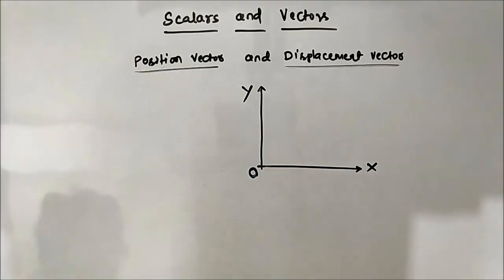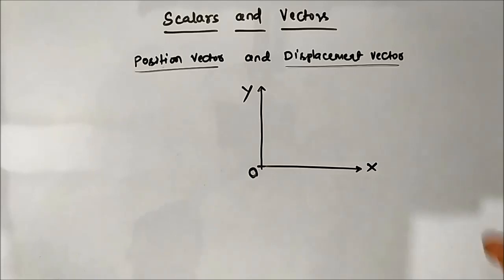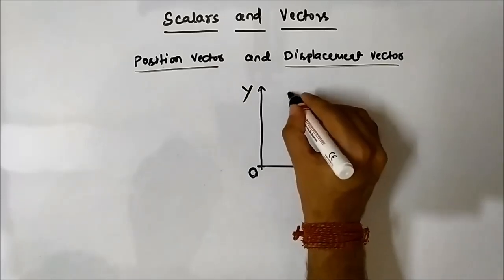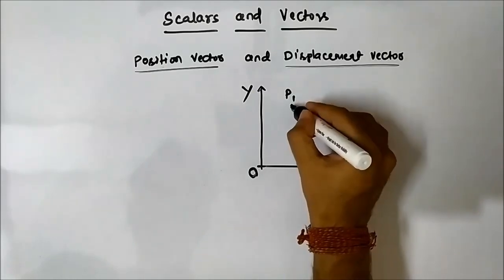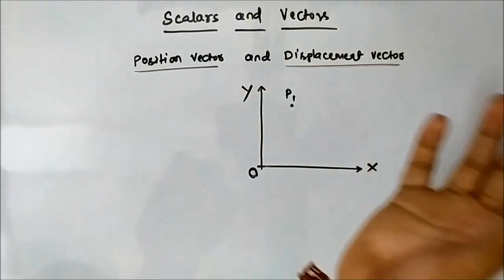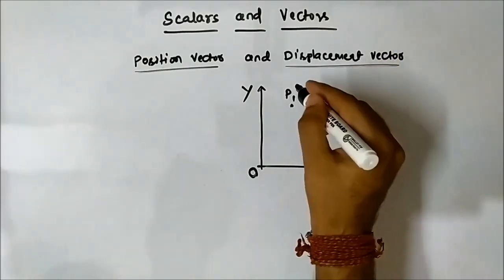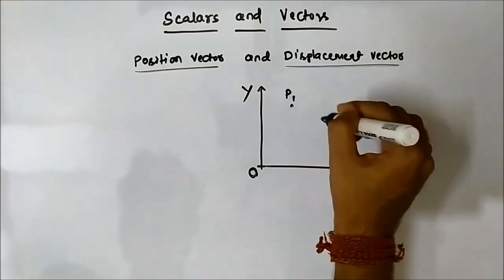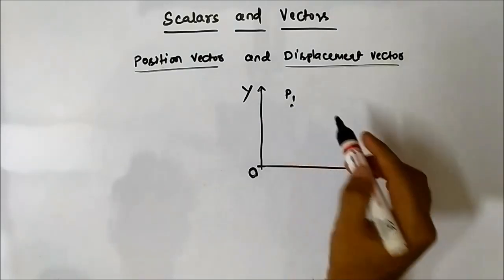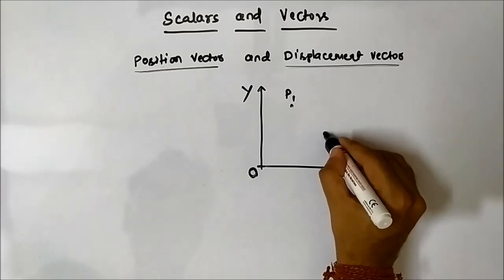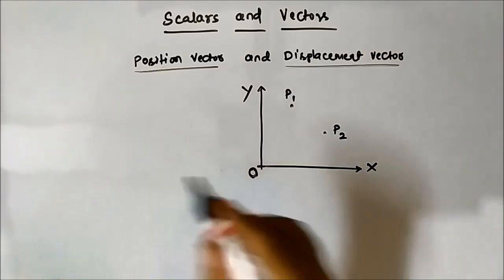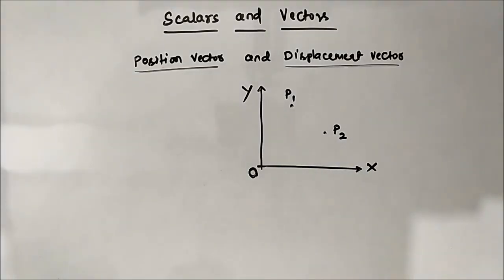Let us say we have an object which was originally at point P1 at a particular time t1 — let us call it the initial time. Then at time t2, it moved from point P1 to P2.